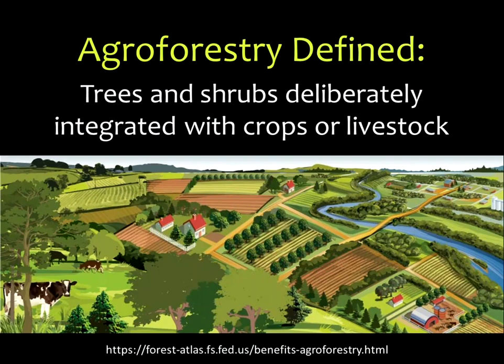So let's provide a specific definition for agroforestry. This occurs when trees and shrubs are deliberately integrated with crops or livestock. There are two elements: the woody species — the trees or the shrubs — integrated with a productive component, the crops or the livestock. The word agroforestry comes from agriculture, so 'agro' being the crop portion, and 'forestry' being the tree and shrub species. You can see in this image how many different types of practices can actually be included under the umbrella term agroforestry.